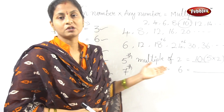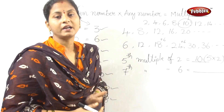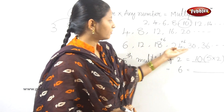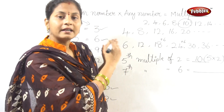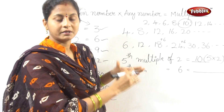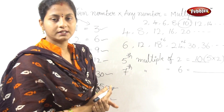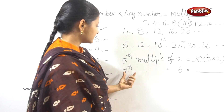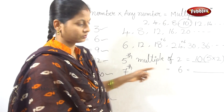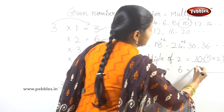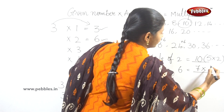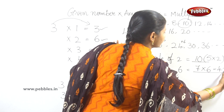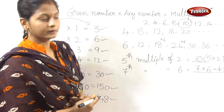The 7th multiple of 6 — that means what is the 7th multiple? We use the 6 times table. 6 sevens are 42. So the 7th multiple of 6 is 42.